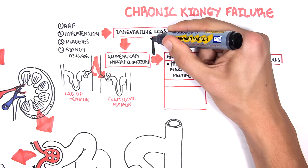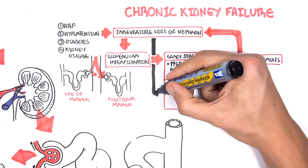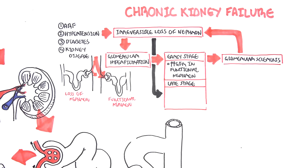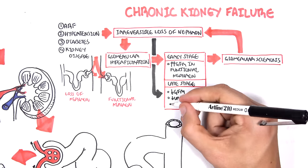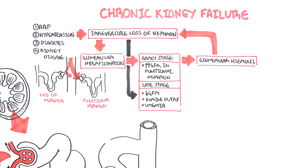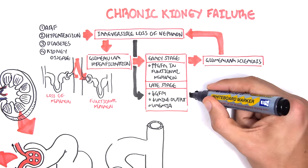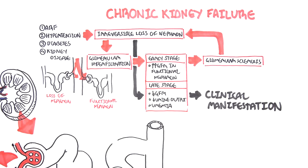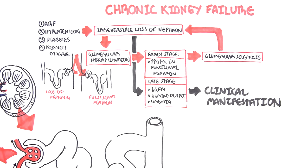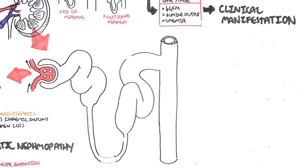In the late stage, so much kidney function is lost that GFR decreases, urine output decreases, and the body begins to retain waste, resulting in uremia. All of this leads to the clinical manifestations of chronic kidney failure.